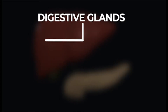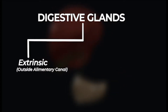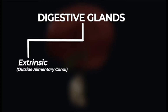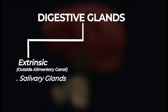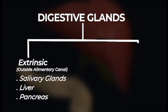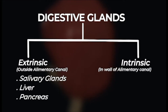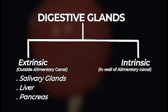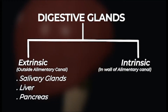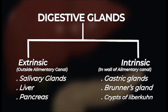We have two broad categories of digestive glands. The extrinsic glands, which are located outside the alimentary canal and drain their secretions into it via their respective ducts — these include the salivary glands, liver, and the pancreas. Here we will be dealing only with the pancreas and the liver, as the salivary glands have already been discussed. We also have the intrinsic glands, which are located in the walls of the GIT itself — these include the gastric glands, the Brunner's glands, and the crypts of Lieberkühn.